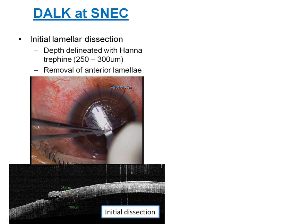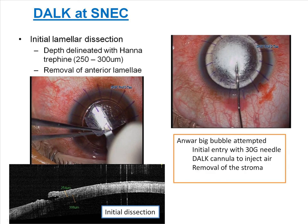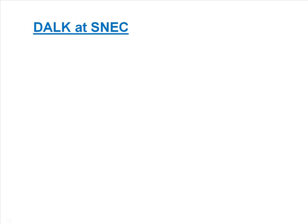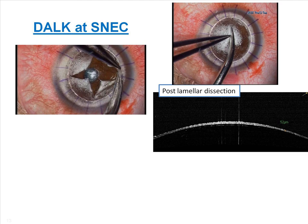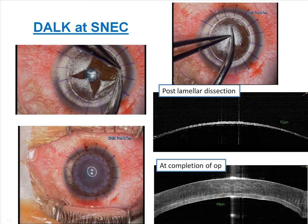At SNEC, we perform a modification of that technique. First, we use the trephine to delineate a depth of 250 to 300 microns, and use a crescent blade to dissect that initial layer of cornea off. Next, we use a 30-gauge needle to create an entry point, and then insert a special blunt cannula to inject air. After the big bubble is obtained, the remaining stroma is dissected off — usually in quadrants — before the donor cornea is sutured in place over the recipient site.